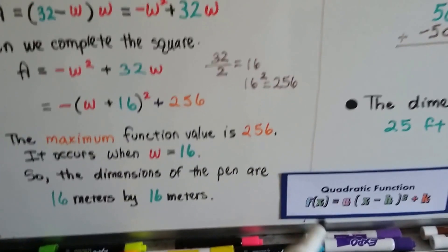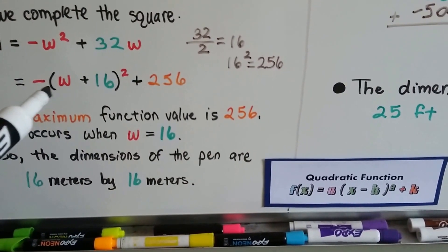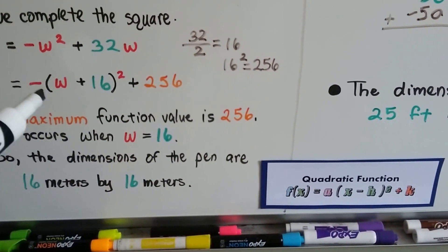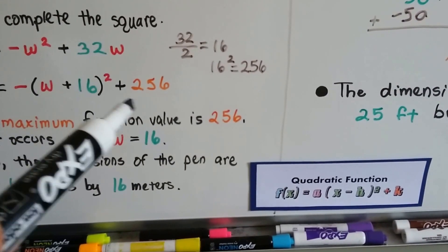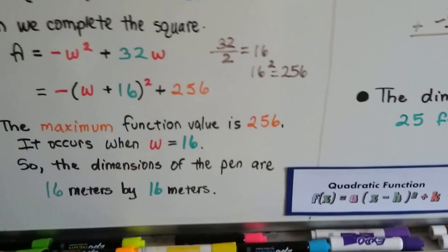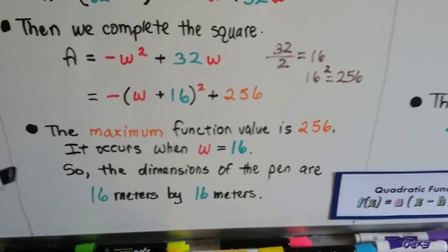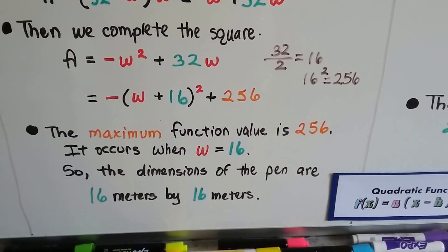Here is our A value right here, it's an invisible one. Here's our X, here's our H squared, and here's our K value, 256. So the maximum function value is 256, this K value right here.